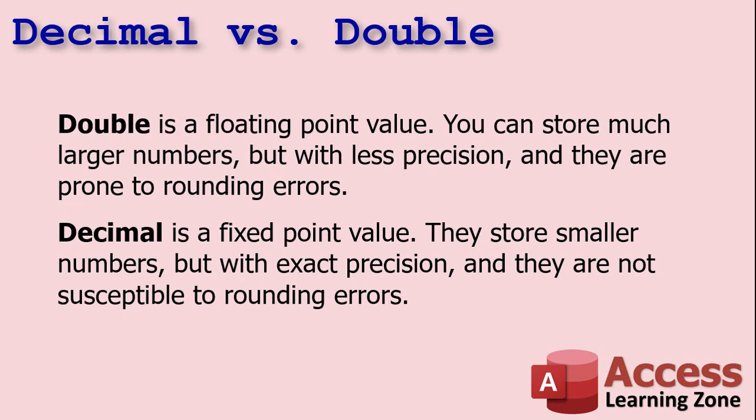Here's the big deal between the two: double is a floating point value, meaning the decimal point floats around — you can have one digit or ten digits after it, and you can store much larger numbers. But with less precision — you can't control exactly how many decimal digits you want. Doubles are also prone to rounding errors. Decimal values, on the other hand, are fixed point values — you specify exactly where the decimal point goes, the number of digits on each side. They store smaller numbers than doubles but with exact precision, and they are not susceptible to rounding errors.